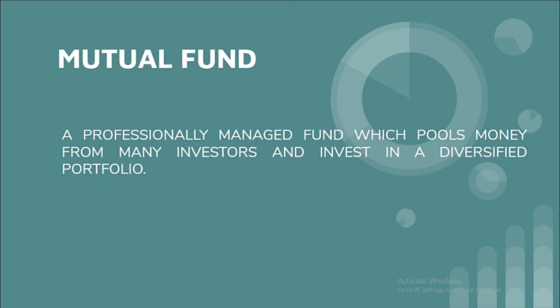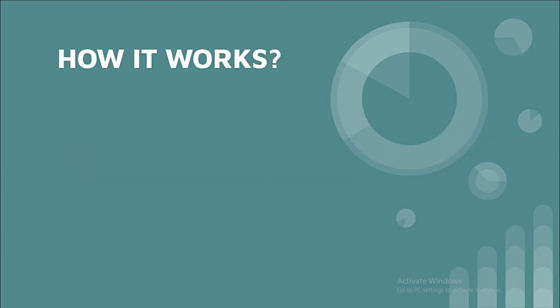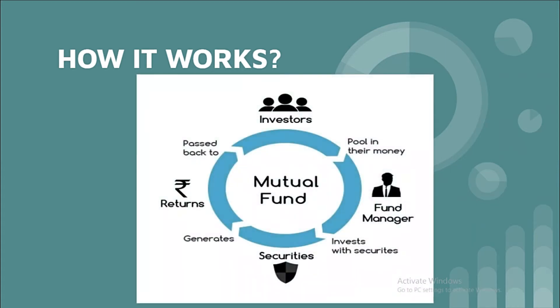Diversification can be of two types. It can be across different sectors — for example investing in the IT sector, pharmaceutical companies, or banking companies. Diversification can also be on a vertical basis, meaning we invest in different asset classes. A mutual fund invests in a diversified portfolio combining these approaches.